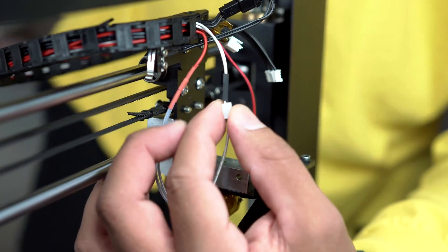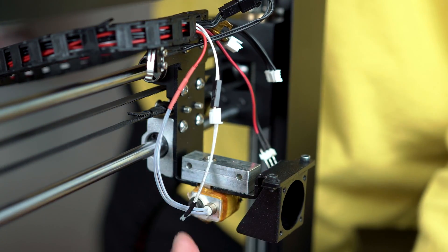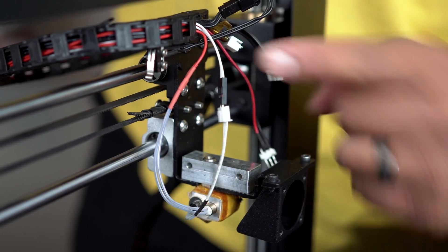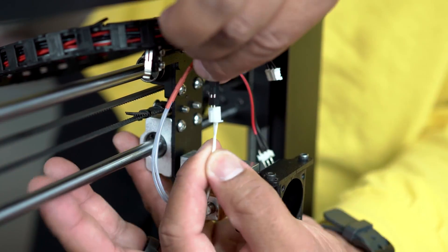There are two components to your extruder thermistor: the cable that runs to the main board and the cable attached to this glass bead. This glass bead senses the temperature and is very fragile.